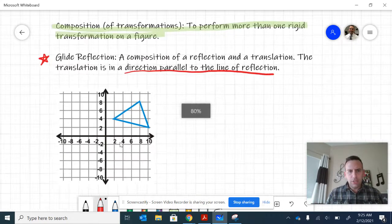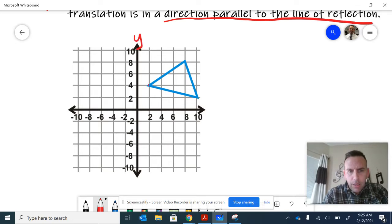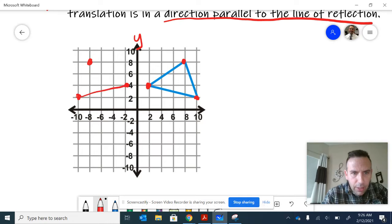Let me zoom in on this triangle. What would happen if I reflected it about the y-axis? This point would reflect right over here, this point would reflect right over here, and this last point would reflect right over here. We'd have our image of the triangle—that would be a reflection about the y-axis.